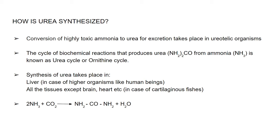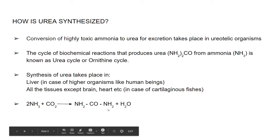In higher organisms like human beings, urea is formed in the liver. The cycle is known as the urea cycle or ornithine cycle, and it is also known as the Krebs-Henseleit cycle, named after the scientists who explained it.